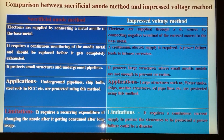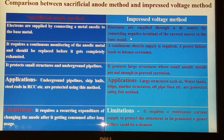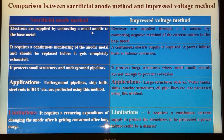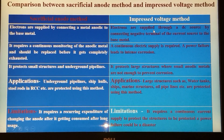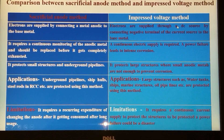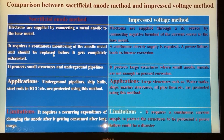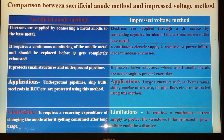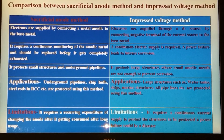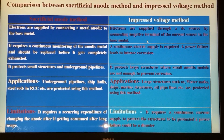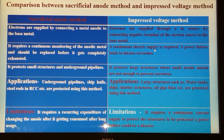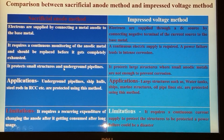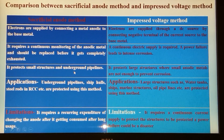Comparing the two cathodic protection methods: in the sacrificial anode method, electrons are supplied by connecting the metal to another metal that is anodic to the base metal, whereas in the impressed voltage method, electrons are supplied via a DC source. In the sacrificial anode method, regular monitoring is important so that the metal is replaced before being completely consumed. In the impressed voltage method, a continuous electric supply is essential — a power failure may lead to intense corrosion.